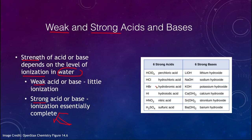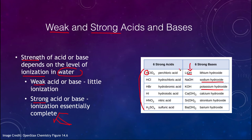Some examples here: there are some strong acids listed, such as hydrochloric acid, and some strong bases, such as sodium hydroxide or potassium hydroxide. Remember that a base is always going to have the OH, the hydroxide, and the acid is always going to have the hydrogen. So when we combine an acid and a base, you get an H plus an OH, which will eventually form water.